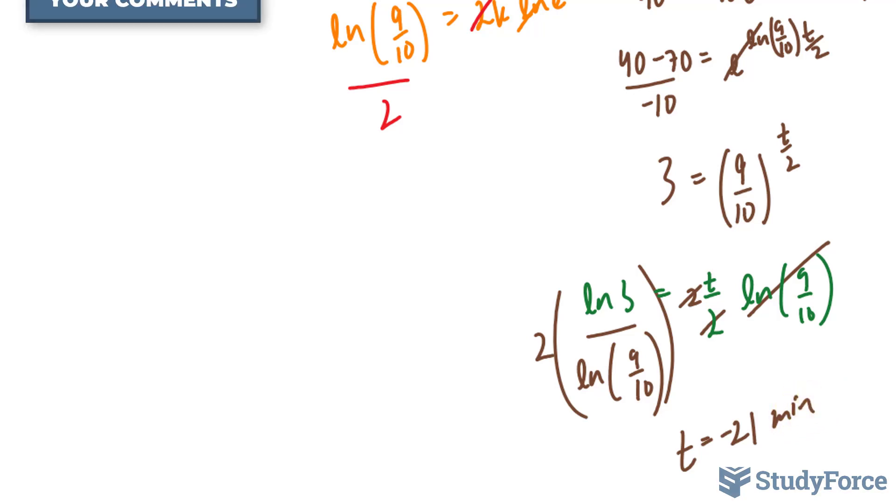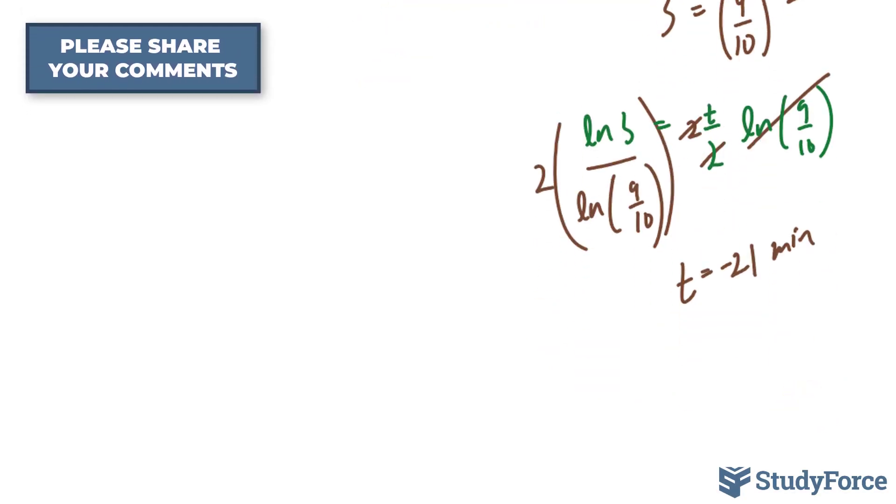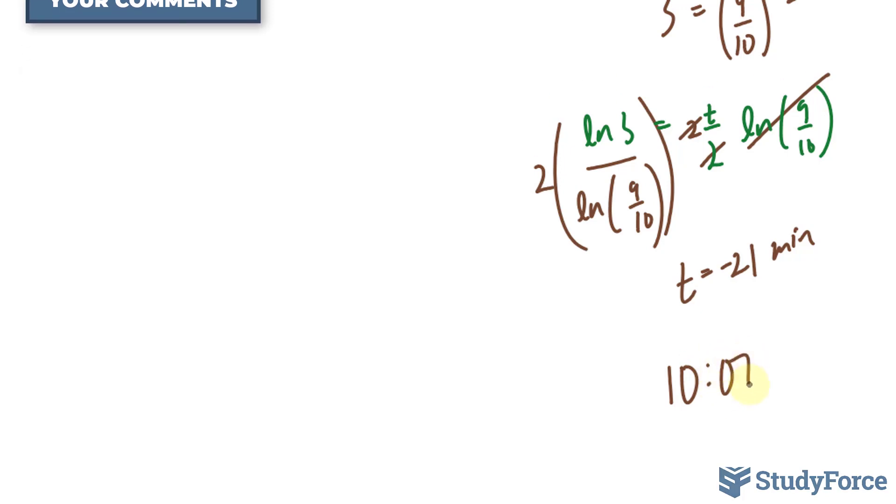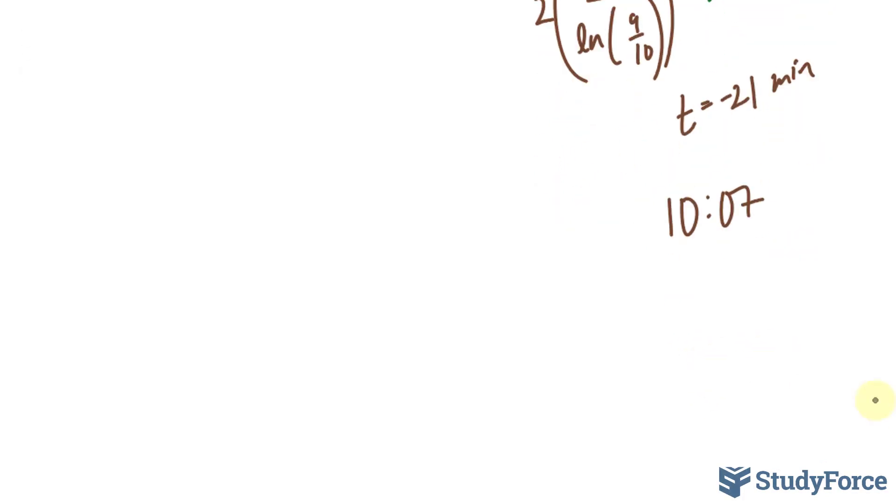Because what this means is that it took 21 minutes before 10:07 when the secret agent was murdered. So let's find out what that is. 20 minutes before this is 9:46 p.m. Therefore, the secret agent was murdered at 9:46 that night.